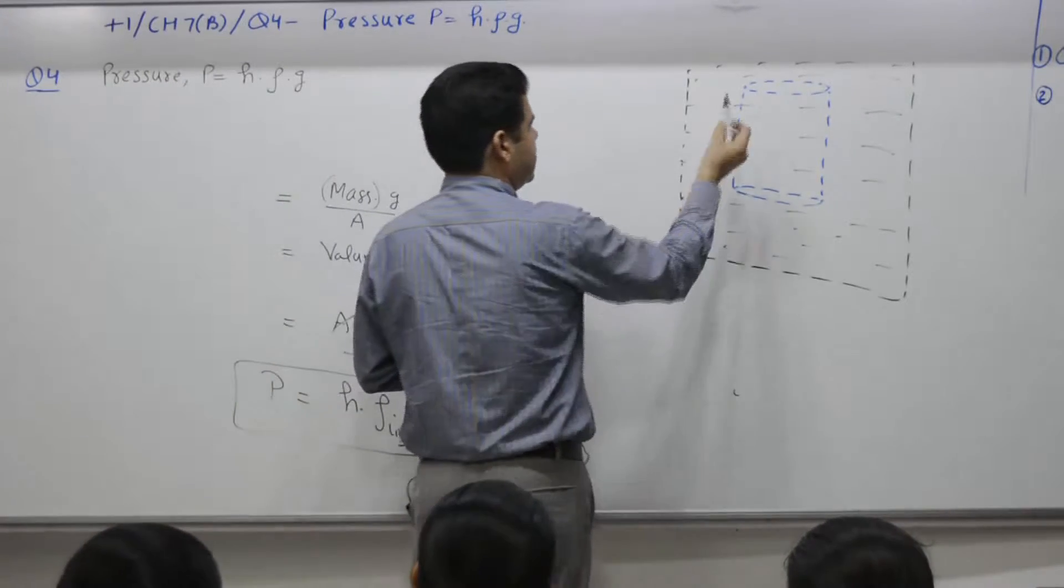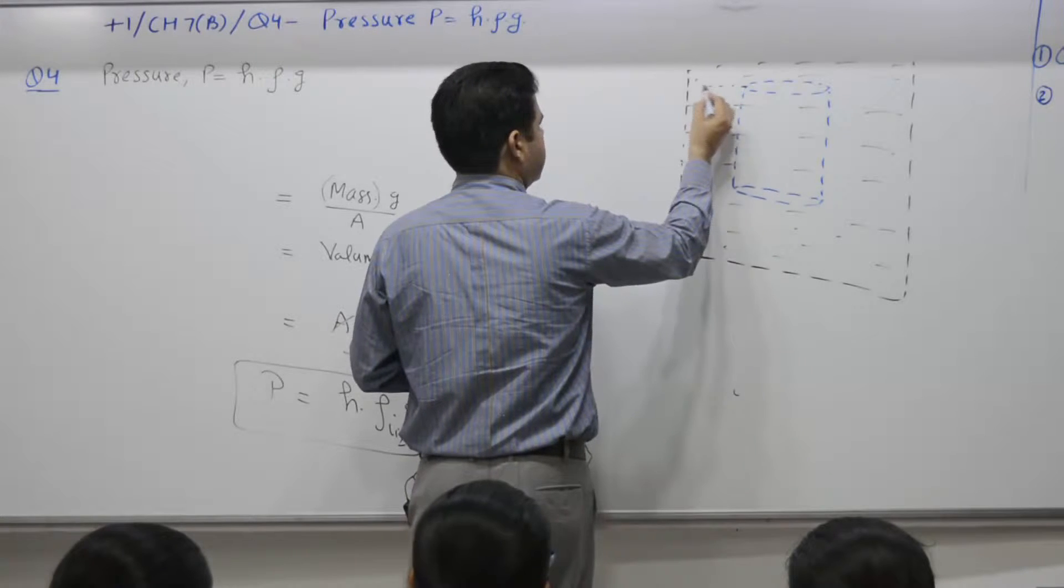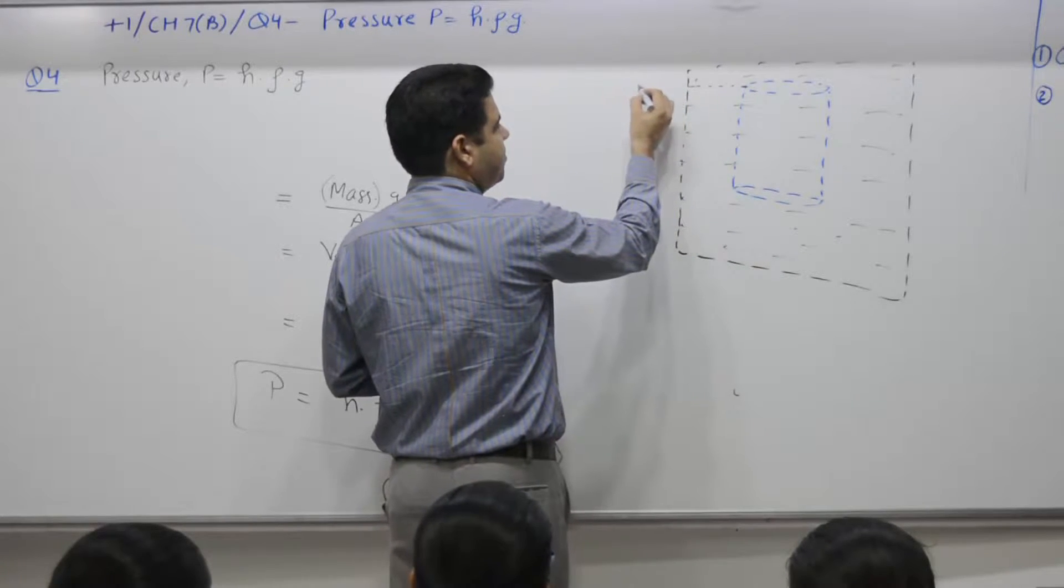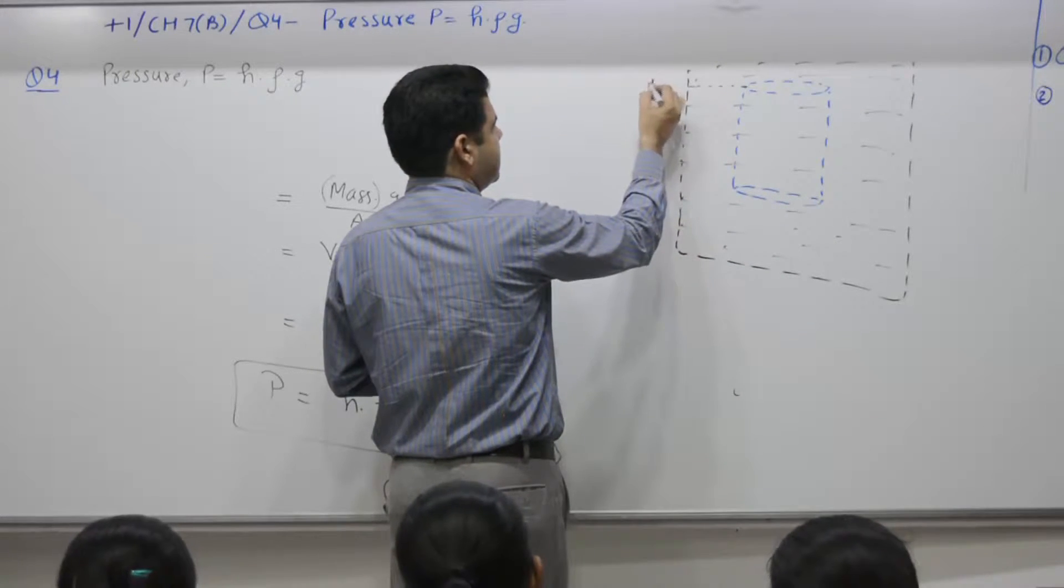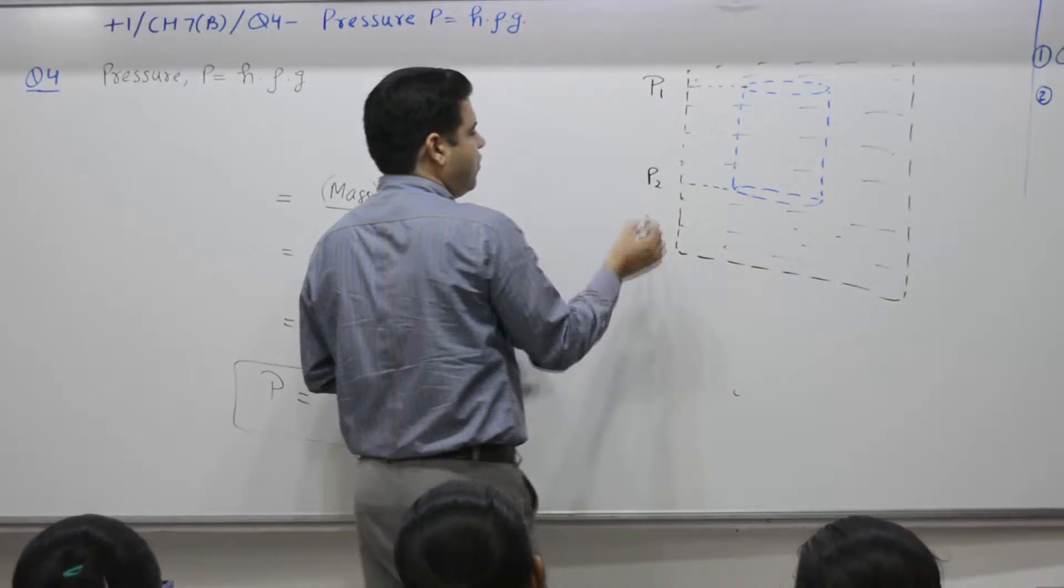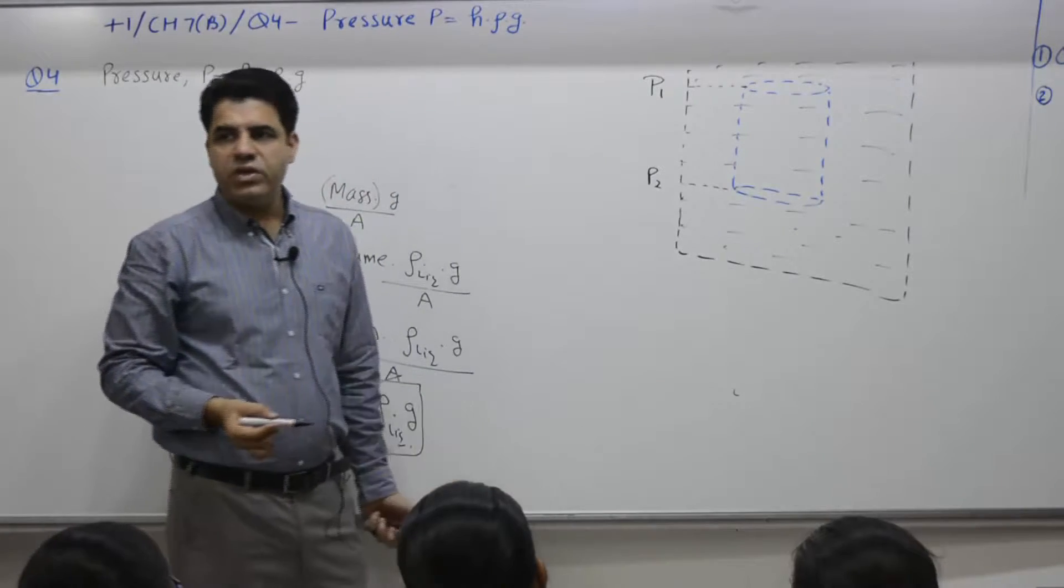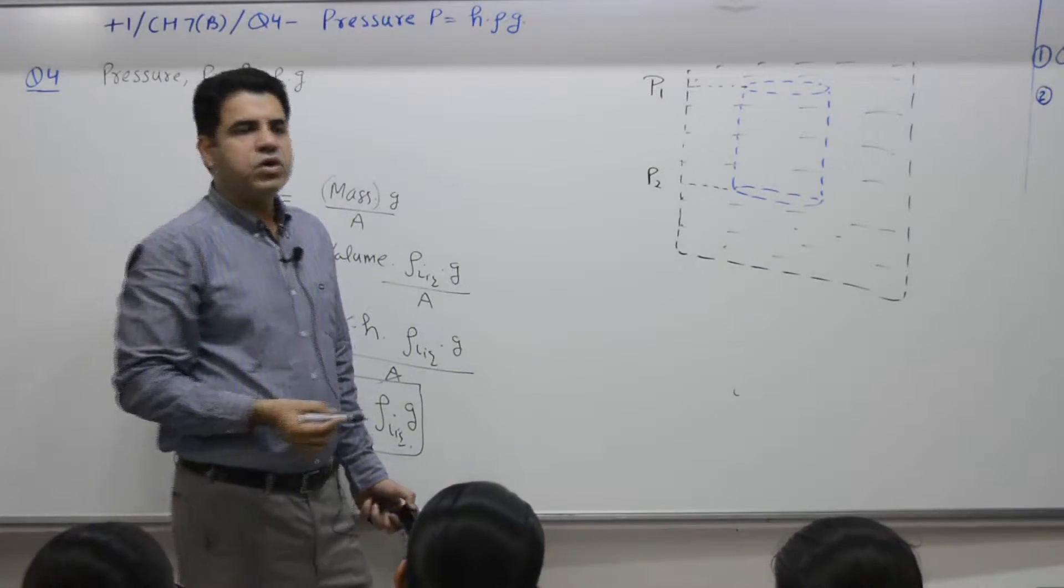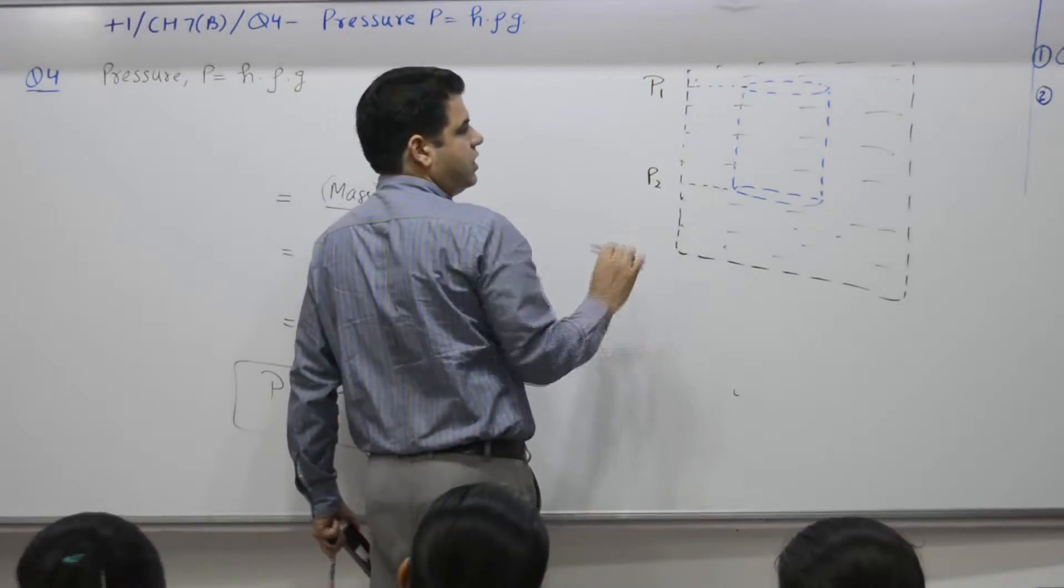So it is at this level, this is level 1, pressure is P1. Pressure is P1. This is level 2, pressure is P2. All of you know, if you know the P2 value will be more than P1, because as you move down pressure keeps on decreasing.